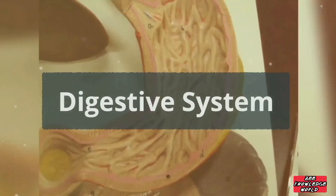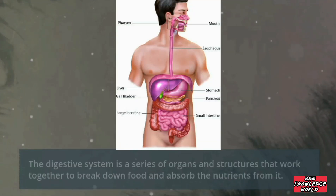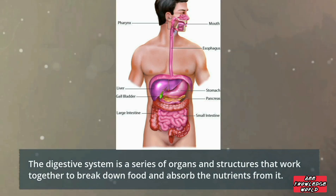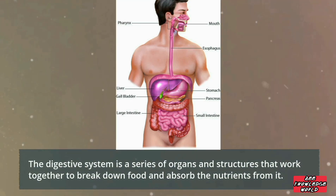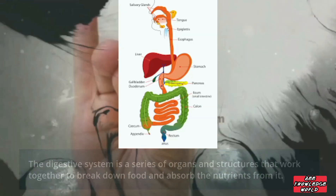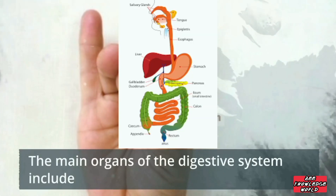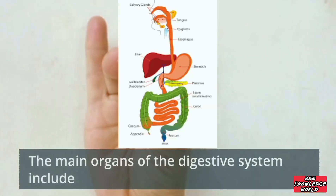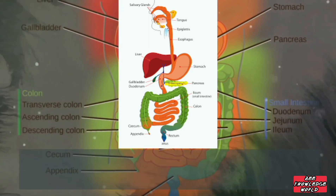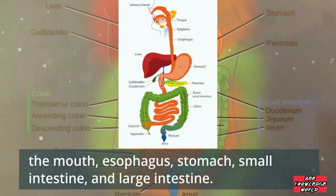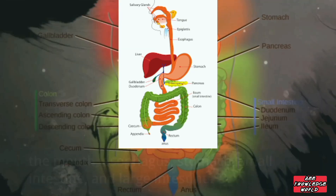The digestive system is a series of organs and structures that work together to break down food and absorb the nutrients from it. The main organs of the digestive system include the mouth, esophagus, stomach, small intestine, and large intestine.